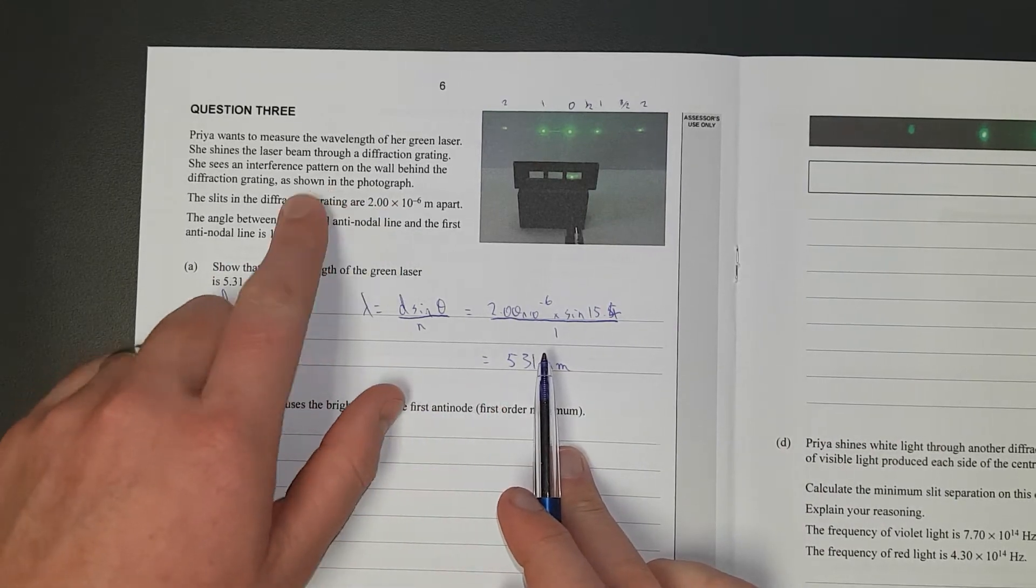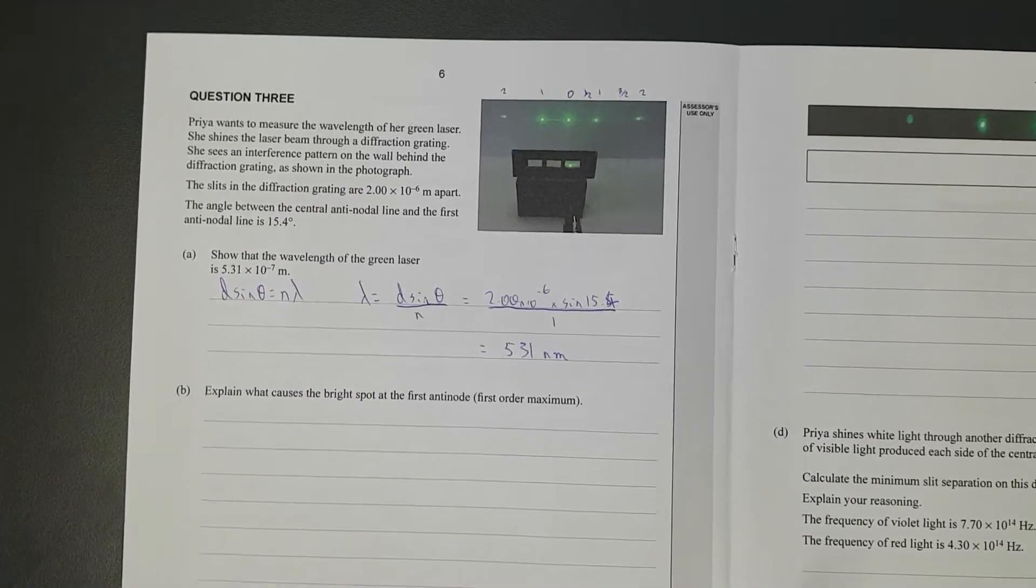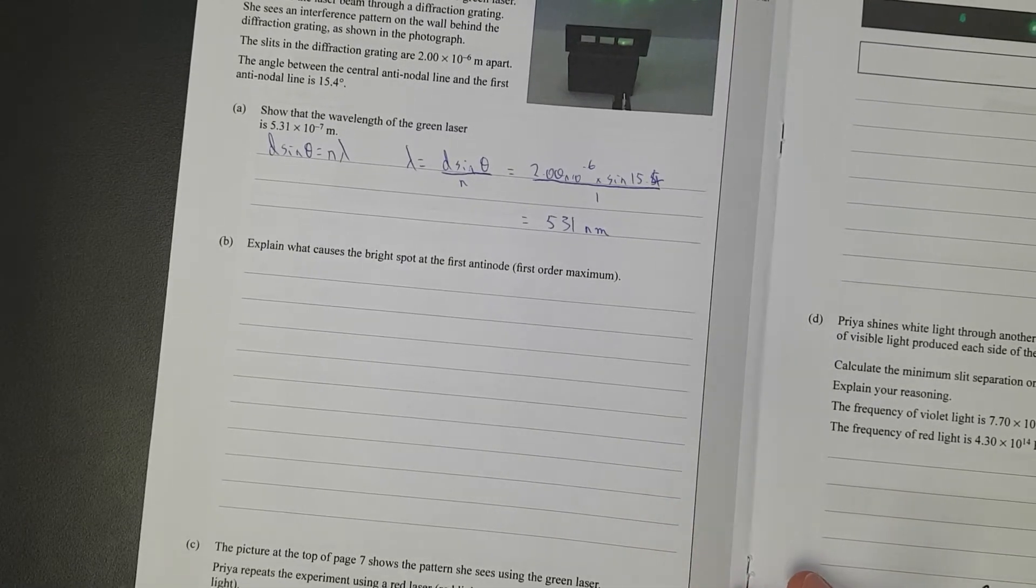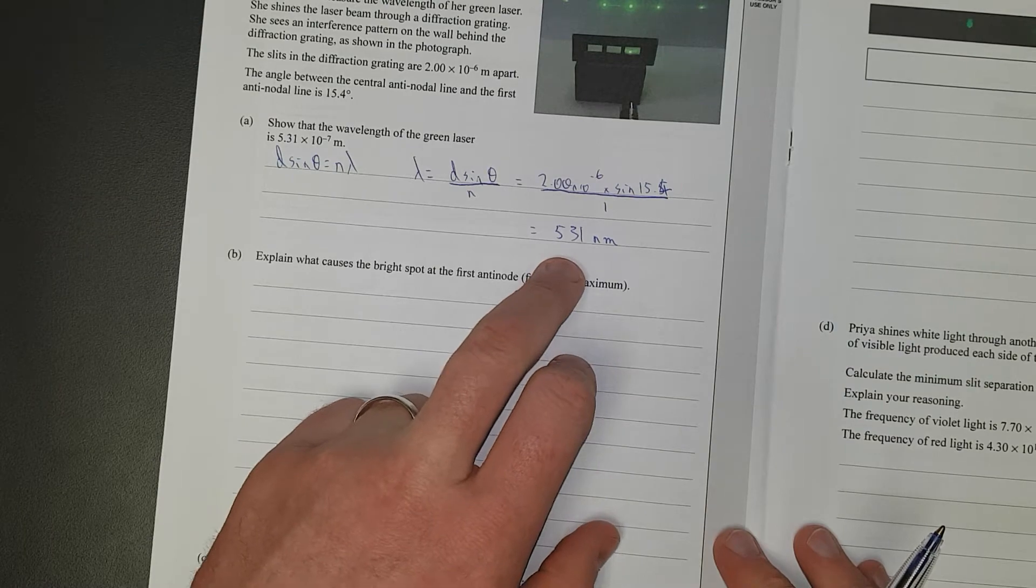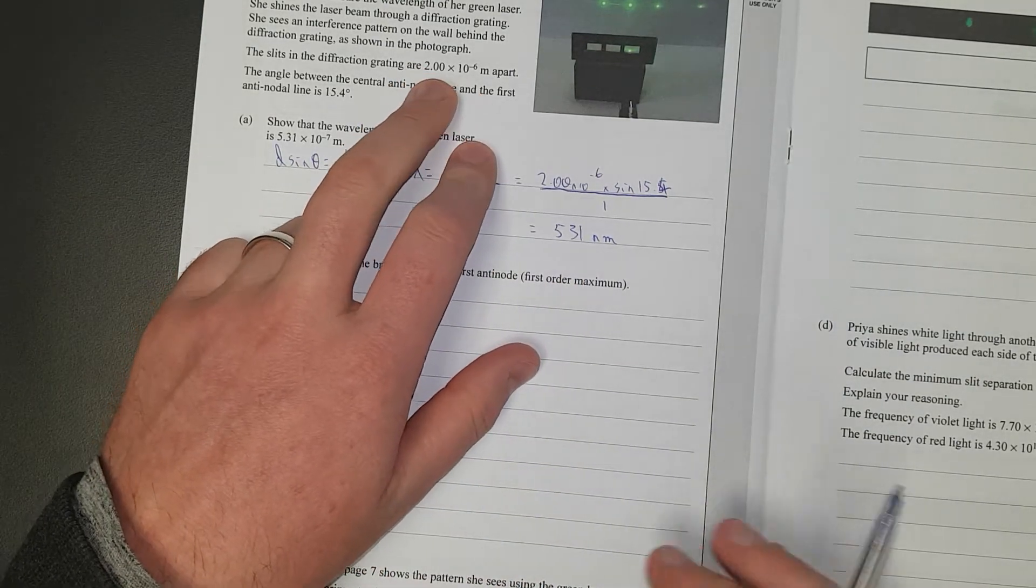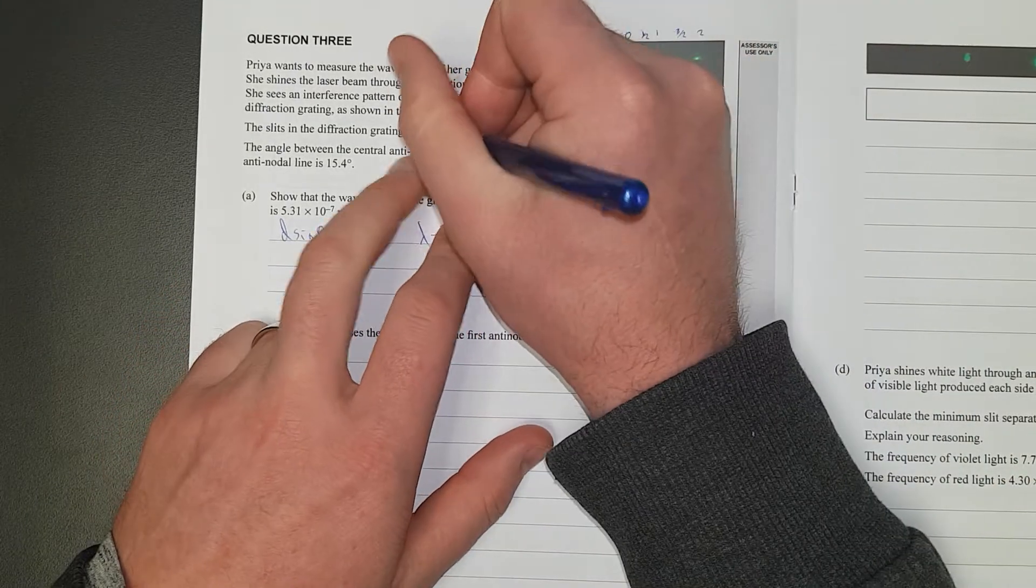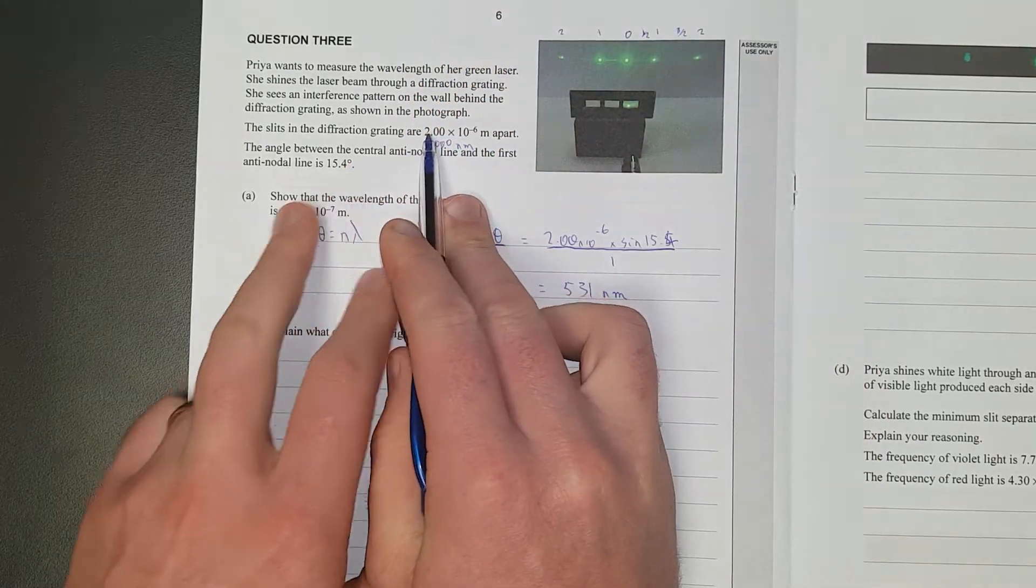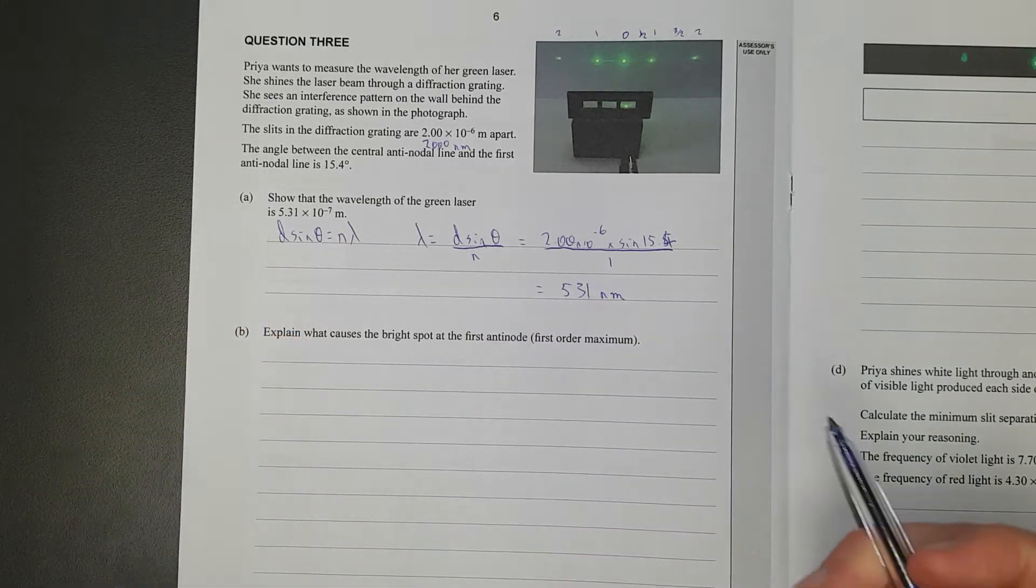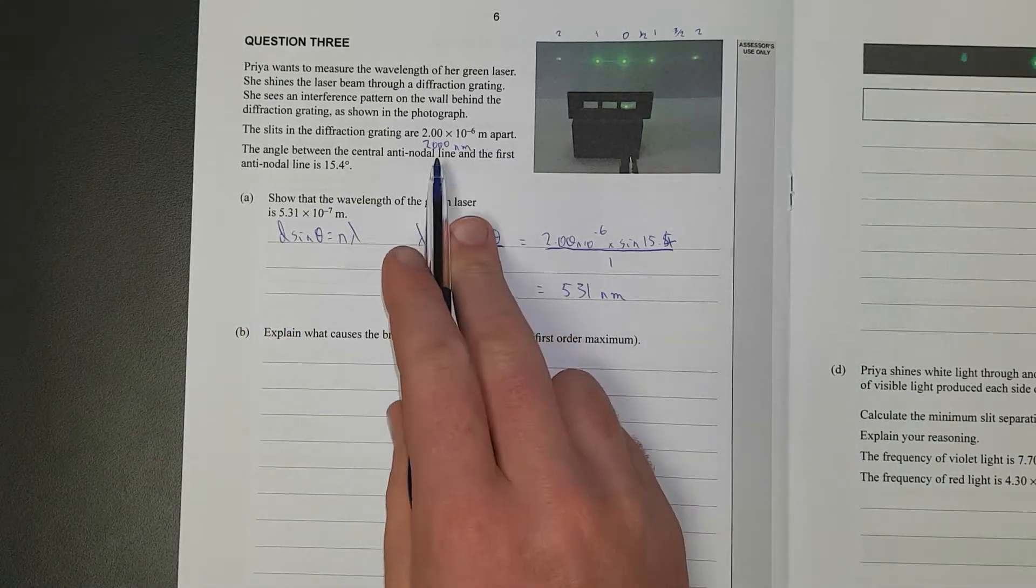3 significant figures, because everything else is 3 SF, and use nanometers because lasers are always in nanometers. They've got it like that, but whatever. And just whilst we're here, 2 micrometers is actually equal to 2,000 nanometers, because we shift three zeros across. We'll need to use this soon.